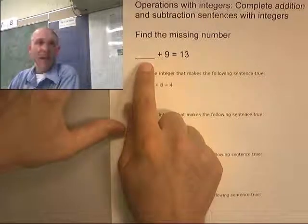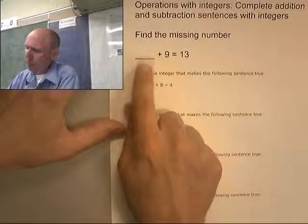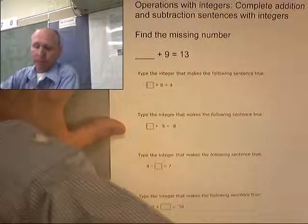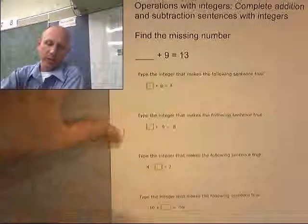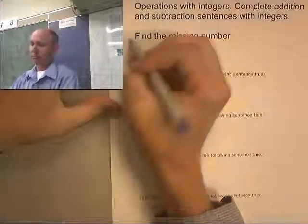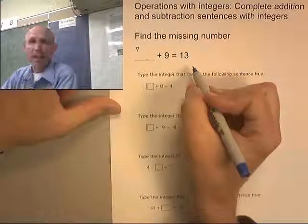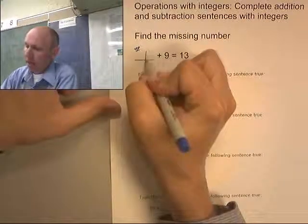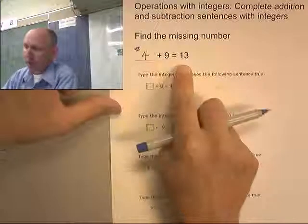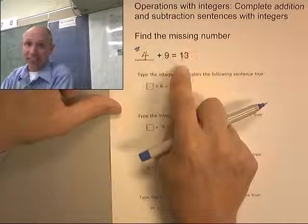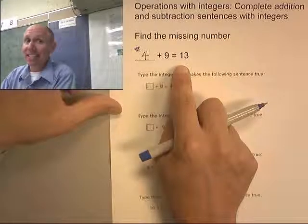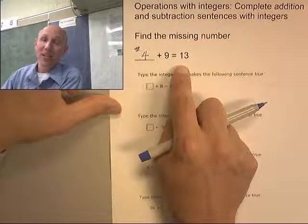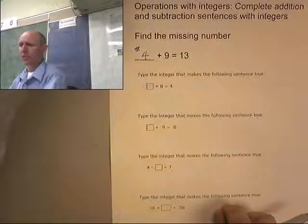When you get further in algebra, we'll use a variable. But here, what plus 9 equals 13? I could just do trial and error if I wanted to. How about 7? Does 7 plus 9 equal 13? No. How about 4? Does 4 plus 9 equal 13? Yes. So we're going to do problems like this, except with integers, meaning with negative numbers. Okay, let's do some.